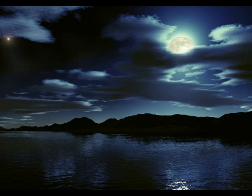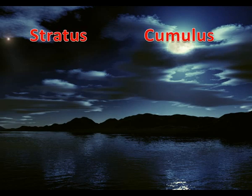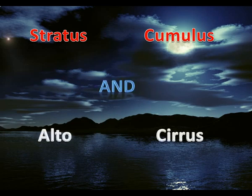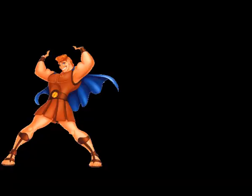Like the phases of the moon, two pairs of words can be used in naming types of clouds. The first pair is Stratus and Cumulus, while the second pair is Alto and Cirrus.